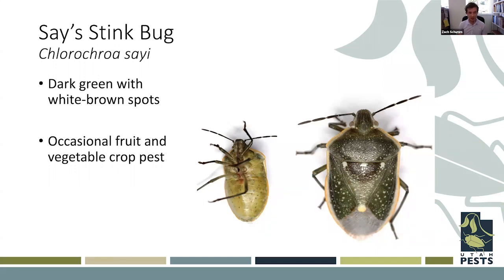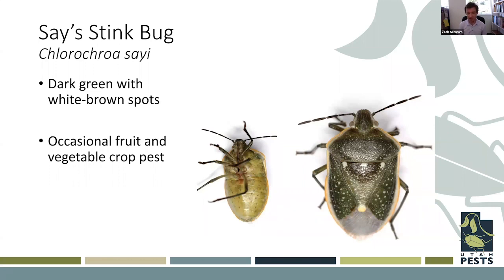The Say stink bug, Chlorochroa sayi, is in the same genus as the conchuela bug and can often be confused with it. It also has a dense pale white or sometimes orange border, but the key difference is it has densely packed white spots on the corium. It only has a green morph. Use the solid coloration combined with those densely packed white spots to identify it. Like the conchuela bug, it's an occasional fruit and vegetable crop pest that we find throughout the season without heavy infestations.